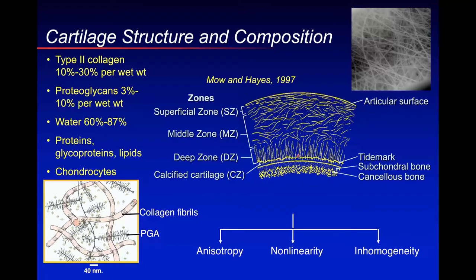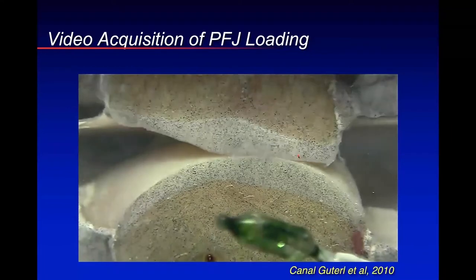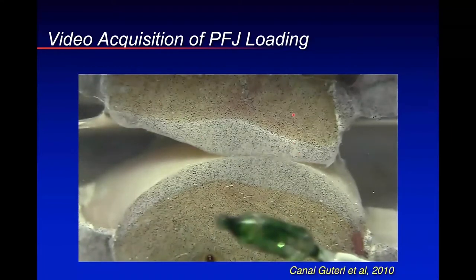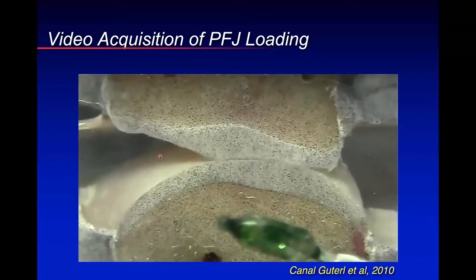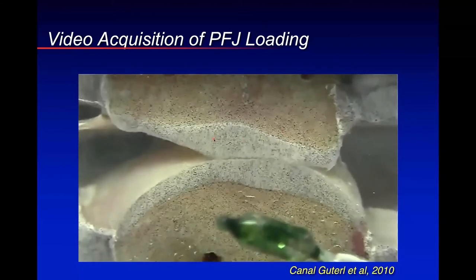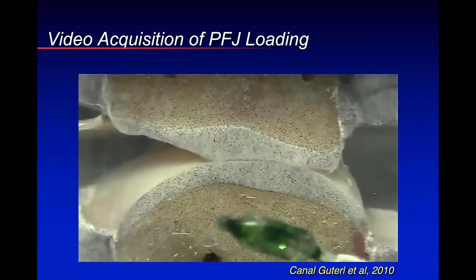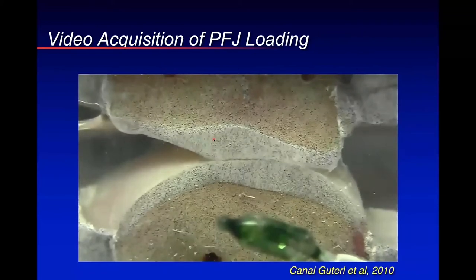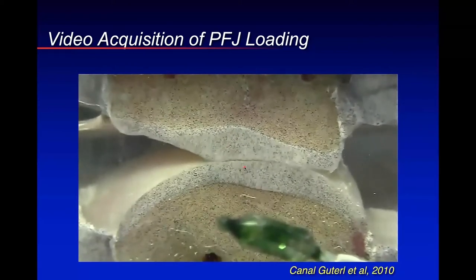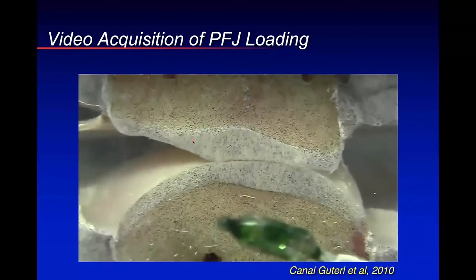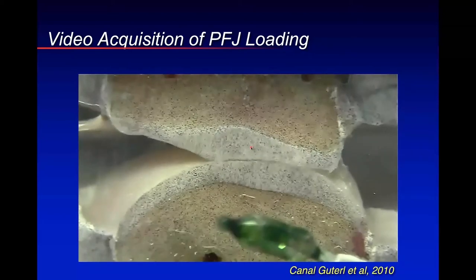When we do cartilage tissue engineering, we ask ourselves which of these various characteristics are most important to reproduce in our tissue constructs. Even though we describe cartilage as a soft tissue, it's actually relatively stiff. Subjecting a half joint to a full body weight, we need cartilage that's as strong as native tissue — which is a very big challenge.